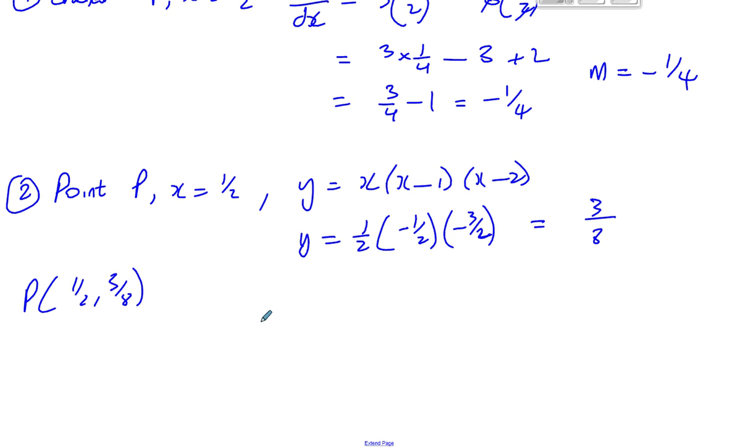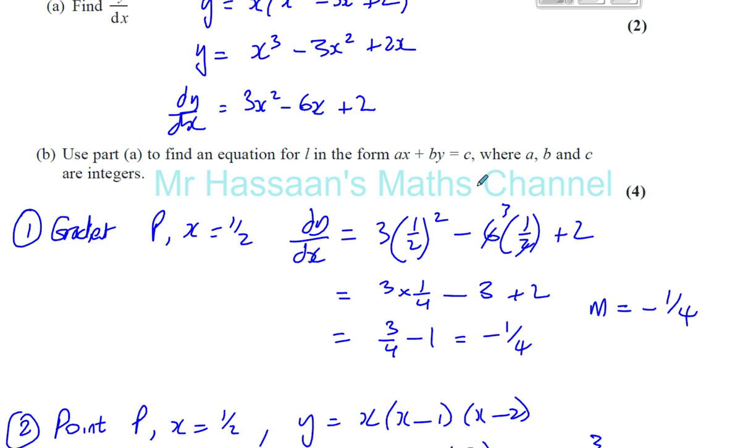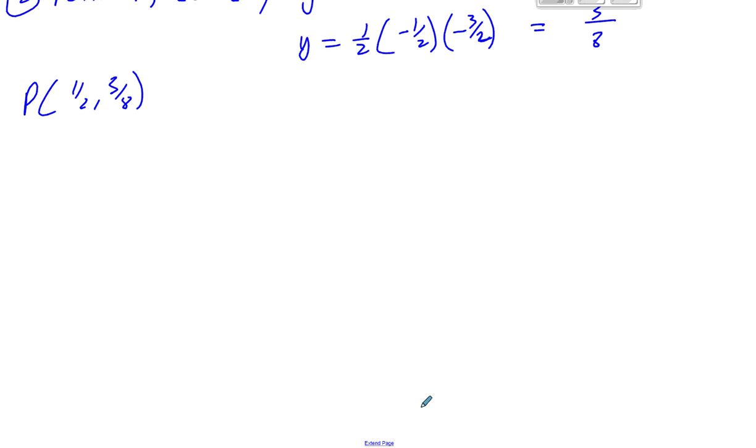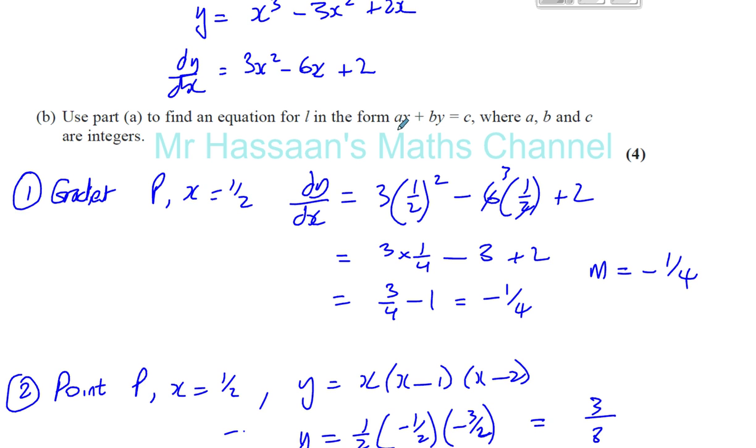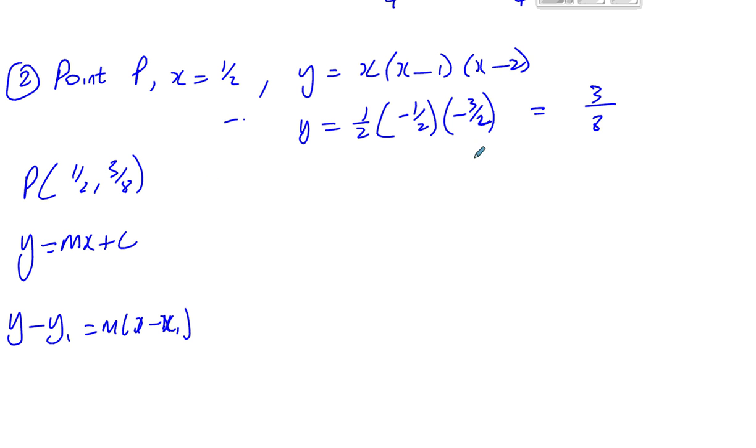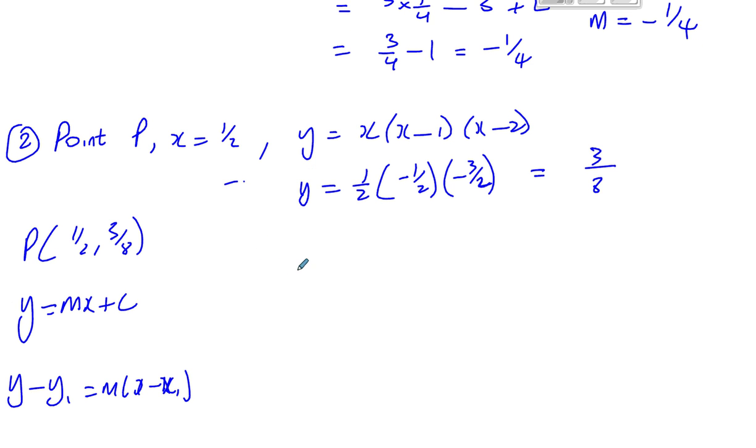Now we're asked to find the equation of the line in the form ax plus by equals c, where a, b, and c are integers. There are two methods to find the equation of a straight line: one is using y equals mx plus c, and the other is using y minus y1 equals m times x minus x1. Whenever they ask us in this form, and especially when we've got fractions to deal with, I suggest you use y minus y1 equals m times x minus x1.